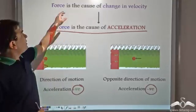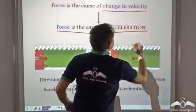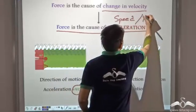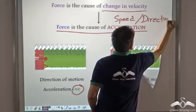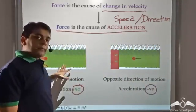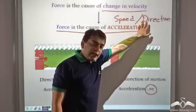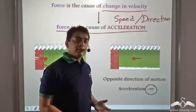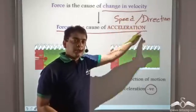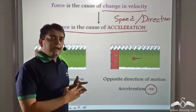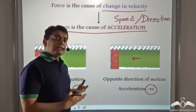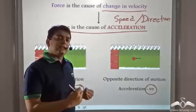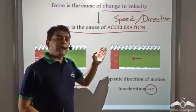Notice that force is the cause of change in velocity, and change in velocity can happen due to change in speed or change in direction. So force need not always change speed — force can also just change the direction, or it could change both speed and direction. For example, in a football game, when the striker deflects the ball into the goal post, he might just change the direction of the ball's motion, or he might change both speed and direction. In both cases, it is the force exerted by the striker on the ball which is making the ball move into the goal post.